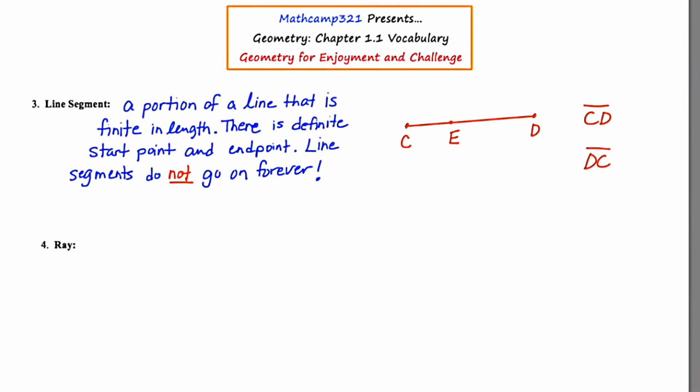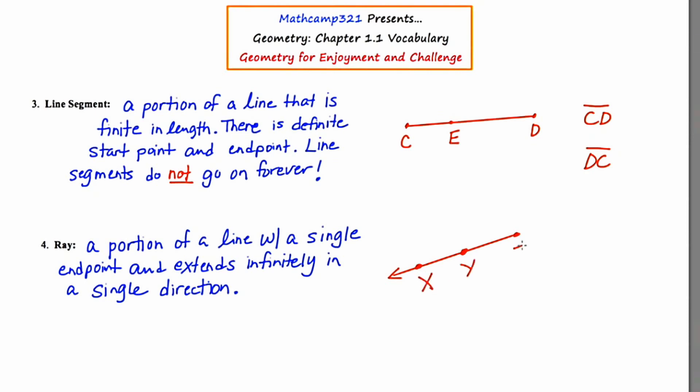The fourth term that we're going to be looking at is a ray. A ray is a portion of a line with only one end point and it extends infinitely in only one direction. So I'm going to draw an example of a ray, and I'm going to put three letters or three points on this ray, and I'm going to use the letters XYZ. So notice how there's one start point, which would be Z, and it extends infinitely in the direction of Y or in the direction of X, however you choose to see it.